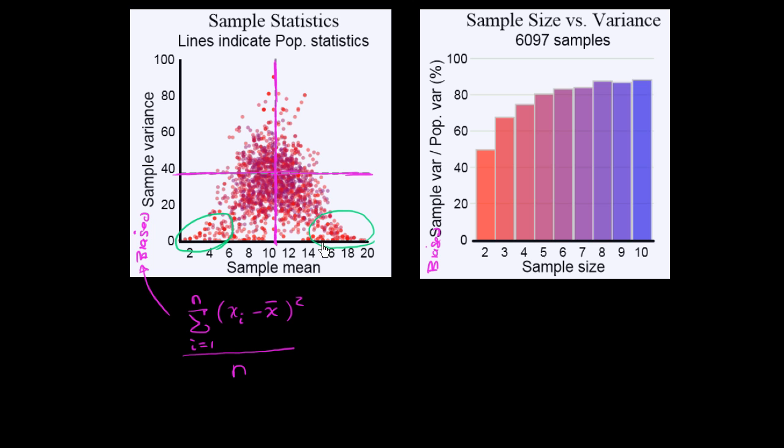or they're disproportionately the cases where the means for those samples are way far off from the true sample mean. Or you could view that the other way around. The cases where the mean is way far off from the sample mean, it seems like you're much more likely to underestimate the sample variance in those situations.